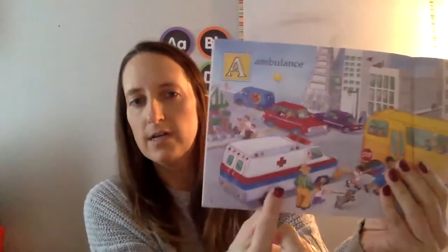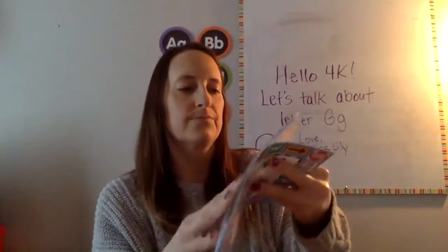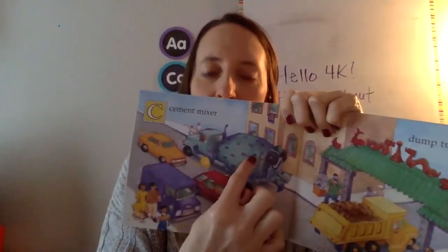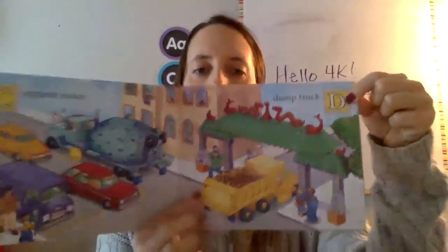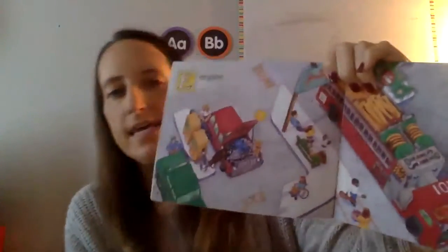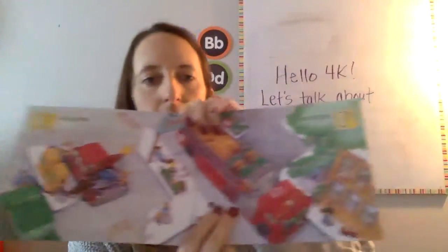A is for ambulance. B is for bus. C is for cement mixer. D is for dump truck. E is for engine — that's inside of the car to make it run. F is for fire truck.